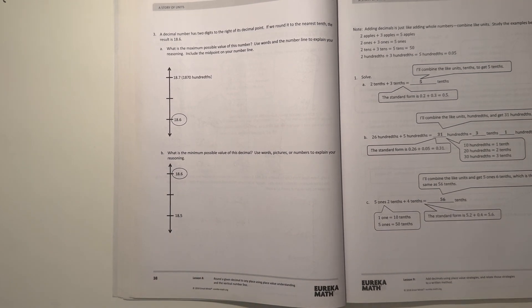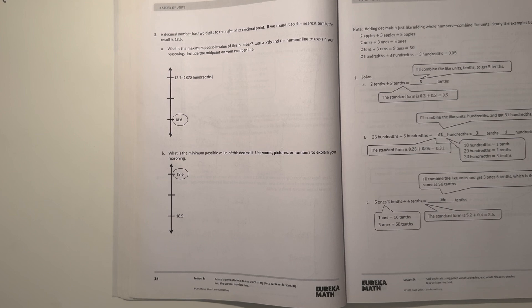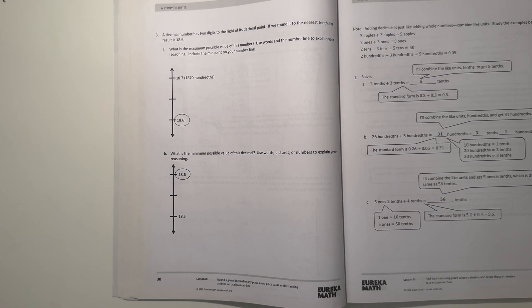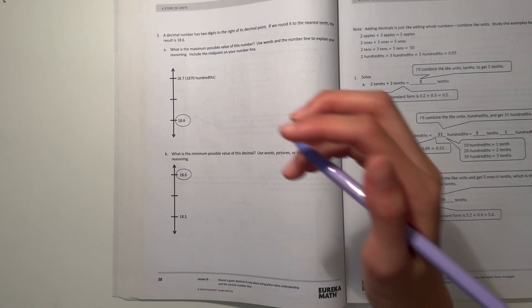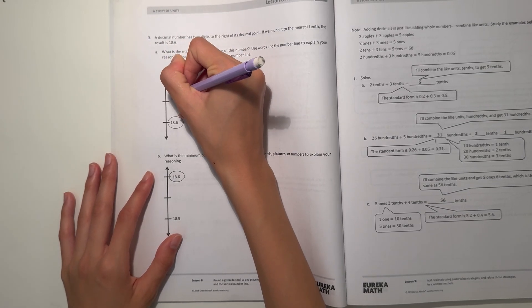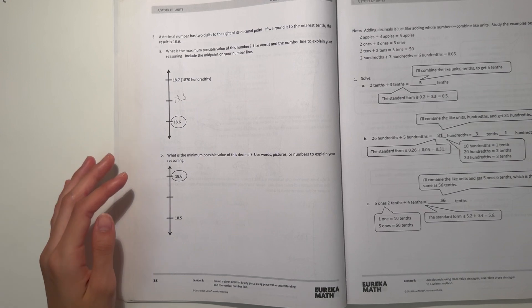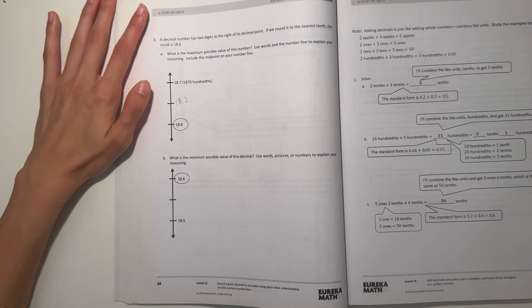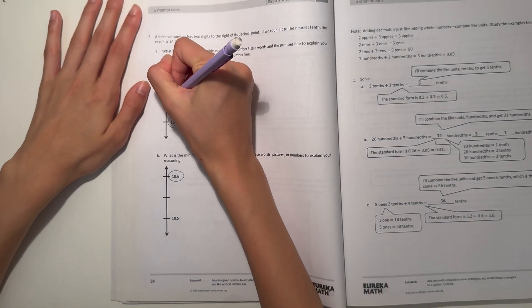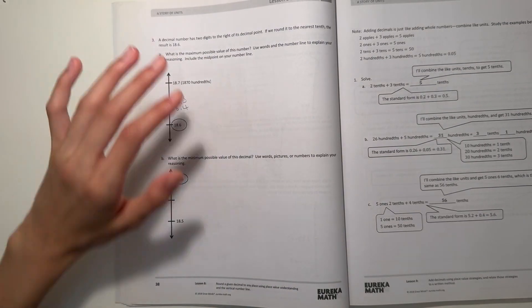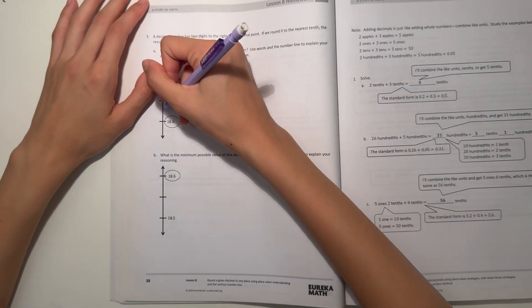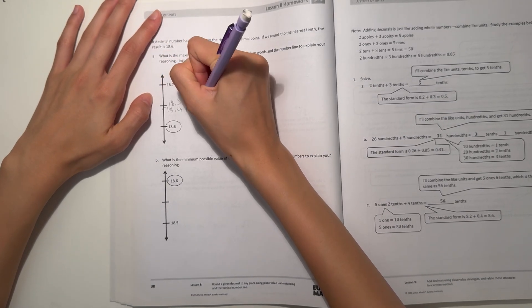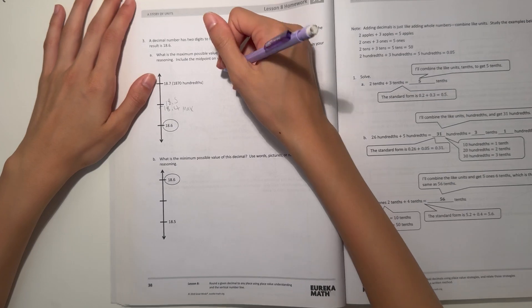So the max possible value of this number. So if we're rounding to 18.6, we know that everything in the midpoint and beyond is going to round up. So the maximum possible value... So 18.6 and 18.7, our midpoint would be 18.65. But we know everything, including 18.65, if it's greater than that, then that would round up to 18.7. So that means the one right below it would be 18.64. So that would be the maximum amount to round down to 18.6.